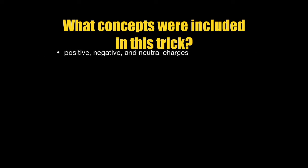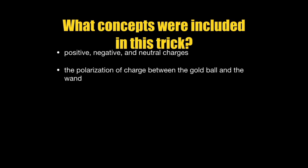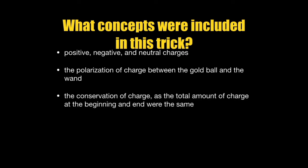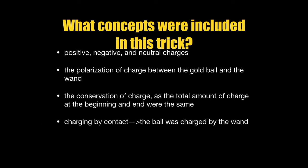Overall, what concepts were included in this trick? First, there were positive, negative, and neutral charges. There was also polarization of charge between the gold ball and the wand. Next, the conservation of charge occurred, as the total amount of charge at the beginning and end of the magic trick were the same. There also was charging by contact, as the ball was charged by the wand when the wand touched the ball.